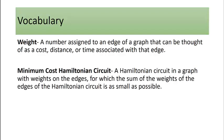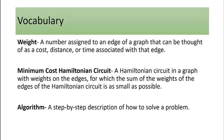The minimum cost Hamiltonian circuit is the Hamiltonian circuit in a graph with weights on the edges for which the sum of the weights of the edges is as small as possible. If we think about going on our vacation or being a traveling salesman, we want to travel the smallest distance possible or take the minimum amount of time. An algorithm is a step-by-step description of how we're going to solve that problem.